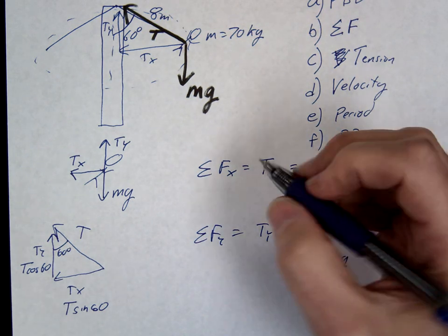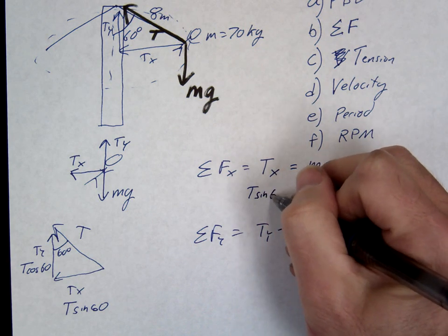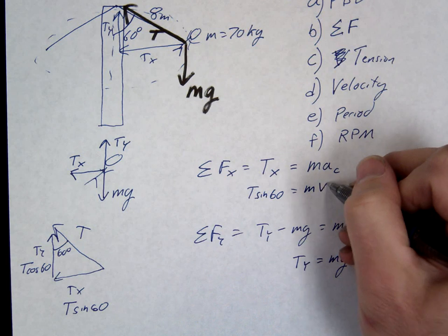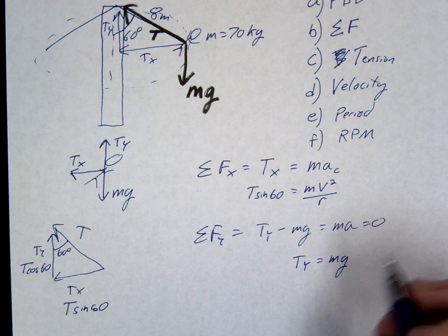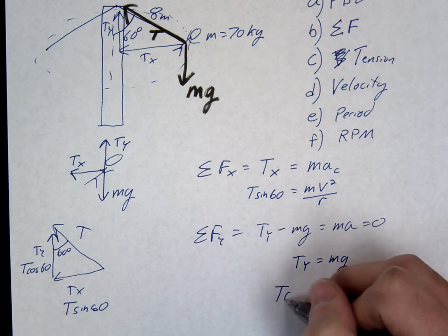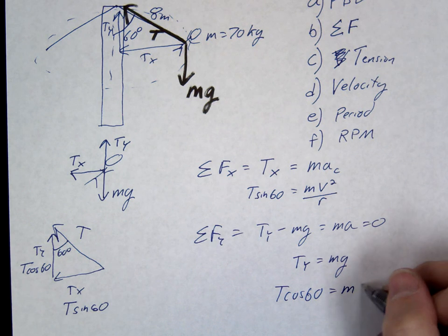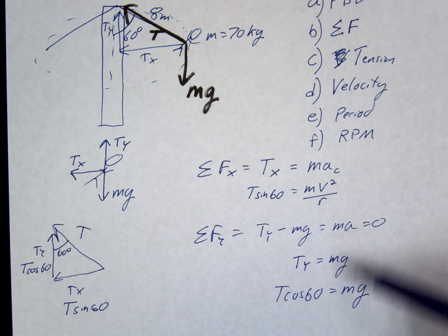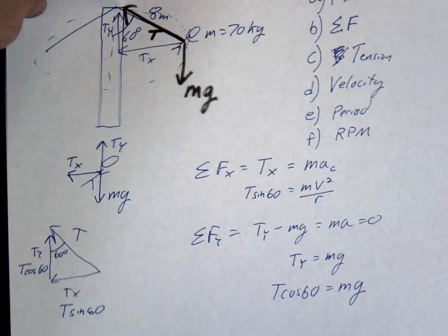So for Tx, we could write Tx as T sine of 60 equals M, let's just do the V squared over R here. And then this one, the Ty, we could write as T cosine of 60 equals mg. So one of these is going to work for us to find the tension. Which one works? The Y one. So let's use the Y values and go ahead and find tension.